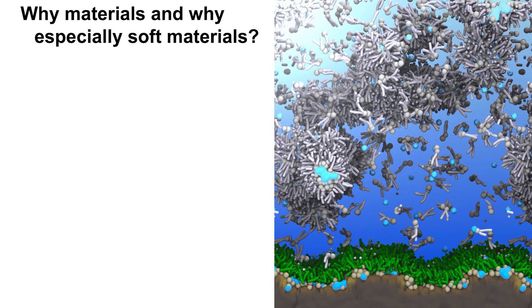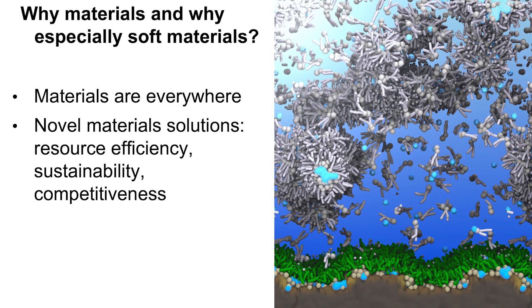These are also all soft materials. My field is soft materials, specifically soft matter modeling. I use computers and computer simulations to study these kinds of things. Why materials? Why especially soft materials? First of all, materials are everywhere — here in this hall, in this building. We are made of materials. The entire society relies on materials. Because of resource efficiency, we actually need novel material solutions. We need them for sustainability and for competitiveness. This is increasingly evident with the sustainability crisis and with the environmental concerns that the world is undergoing.